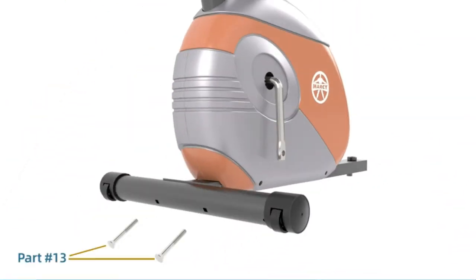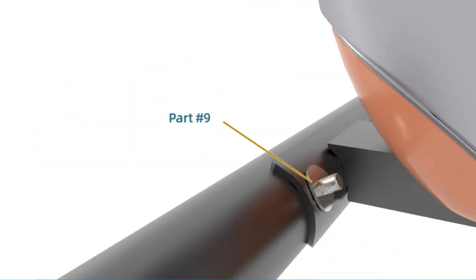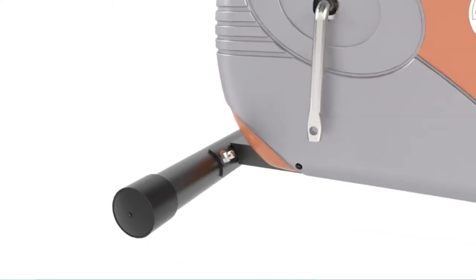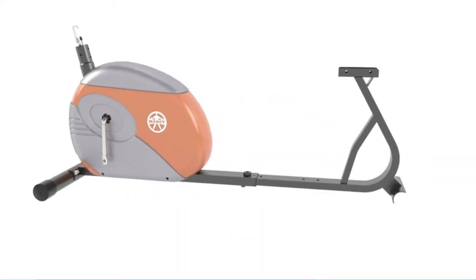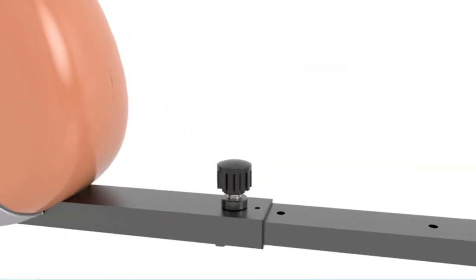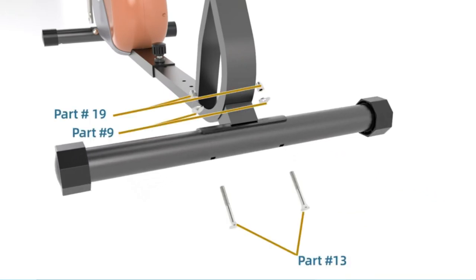The ME709 recumbent is an outstandingly famous example of this and offers the best stationary exercise bike to seniors looking for a great deal. The Marci ME709 offers all the comforts necessary for senior citizens.